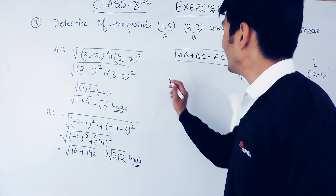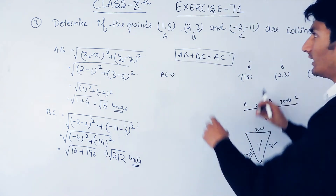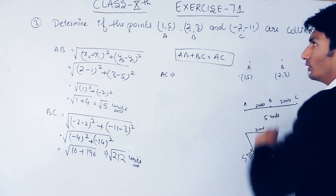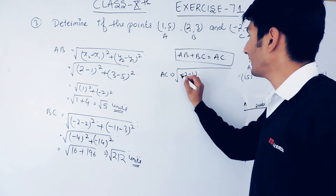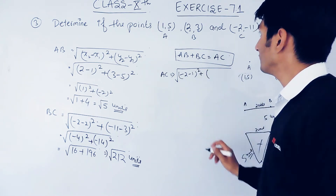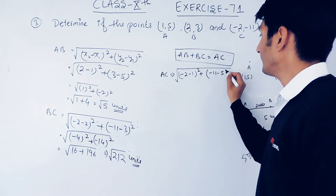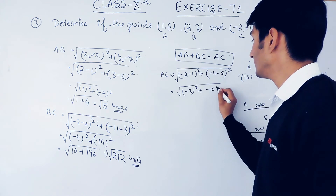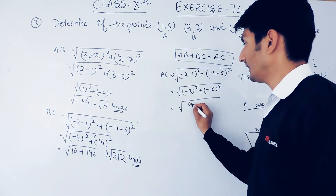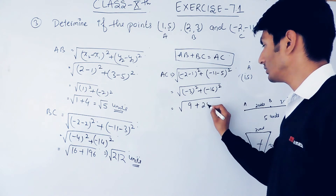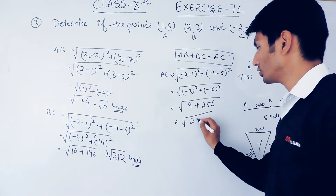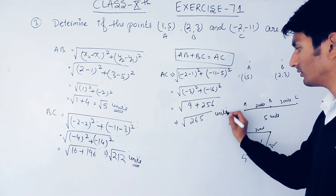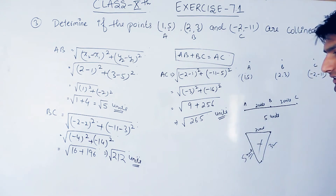Now I have to find the distance AC. For A=(1,5) and C=(-2,-11), x1=1, y1=5, x2=-2, y2=-11. Substituting: √((-2−1)² + (-11−5)²) = √((-3)² + (-16)²) = √(9 + 256) = √265 units.